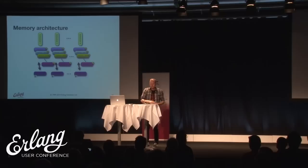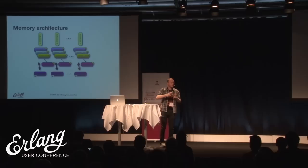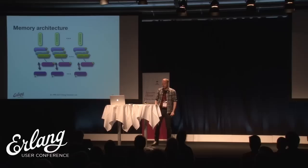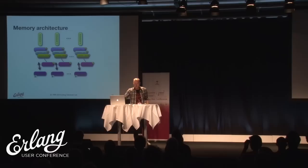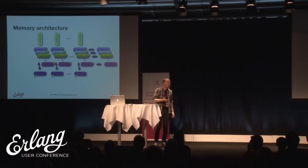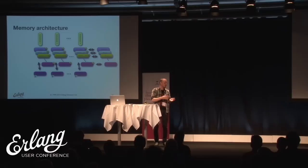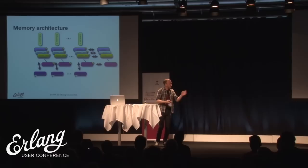Memory can be sent between different schedulers via small mailboxes. When something is allocated on scheduler one and deallocated on scheduler two, we send a message back saying 'please deallocate this later' - message passing between schedulers to avoid locks on the allocators. In R16B01, a common pool was added where schedulers can abandon carriers that have utilization below about 60% - that carrier goes into the pool and another scheduler can pick it up.